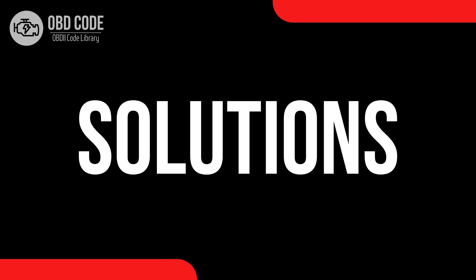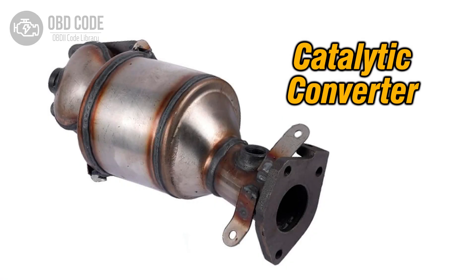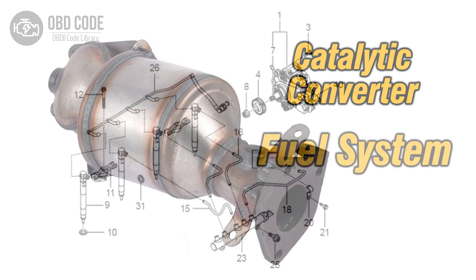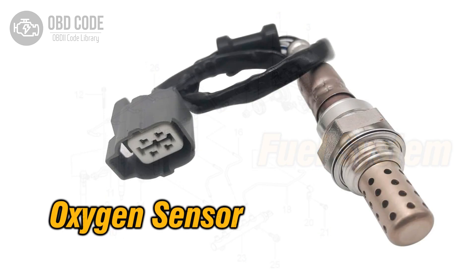Code Solutions P0432: 1. Inspect and, if necessary, replace the main catalytic converter in bank 2. 2. Check for exhaust leaks downstream of the main catalytic converter in bank 2 and repair as needed. 3. Address any fuel system issues to ensure proper combustion. 4. Test and, if necessary, replace faulty oxygen sensors.